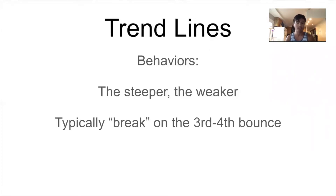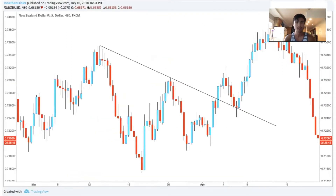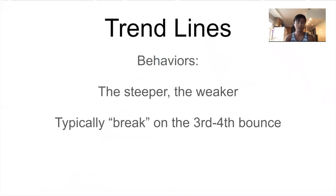Trend lines typically break on the third to fourth bounce. Looking at a trend line, where the first swing low is that's the first touch, the next higher low is the second touch, and then you can see the third touch. Every time the wick touches the trend line, that's a bounce. So if we have a really steep trend line and we see the third bounce forming, chances are it's going to break through it and a fourth bounce won't happen. Knowing these behaviors will help you make trade predictions using trend lines.